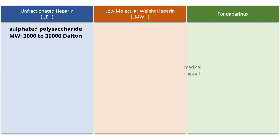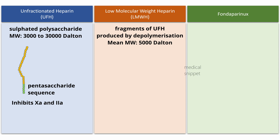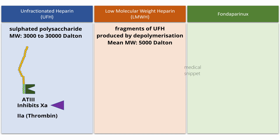Now let's move to the mechanism of action of heparin. Heparin is a sulfated polysaccharide with a molecular weight range of 3,000 to 30,000 Dalton. Low molecular weight heparins are fragments of unfractionated heparin produced by enzymatic or chemical depolymerization, with a mean molecular weight of about 5,000 Dalton. Heparin has a unique pentasaccharide sequence randomly distributed along the heparin chains. Heparin inhibits factor Xa and IIa, that is thrombin, via antithrombin III. Antithrombin III specifically binds to the pentasaccharide sequence of heparin, and this binding activates antithrombin III. The activated antithrombin inhibits activated factor X and thrombin. The rate of inactivation of factor Xa and thrombin by antithrombin is accelerated by 1,000 times in the presence of heparin.